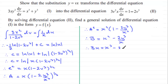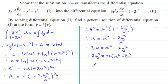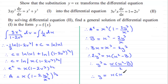Rearranging to make 2y cubed the subject: add 2y cubed to both sides and subtract bx, giving 2y cubed equals x cubed minus bx. Factorising by pulling out x as a common factor gives 2y cubed equals x times x squared minus b. Dividing by 2, y cubed equals x times x squared minus b, all over 2. Finally, taking the cube root of both sides, y equals x times x squared minus b over 2, all to the power of one third. That's our general solution, y as a function of x.